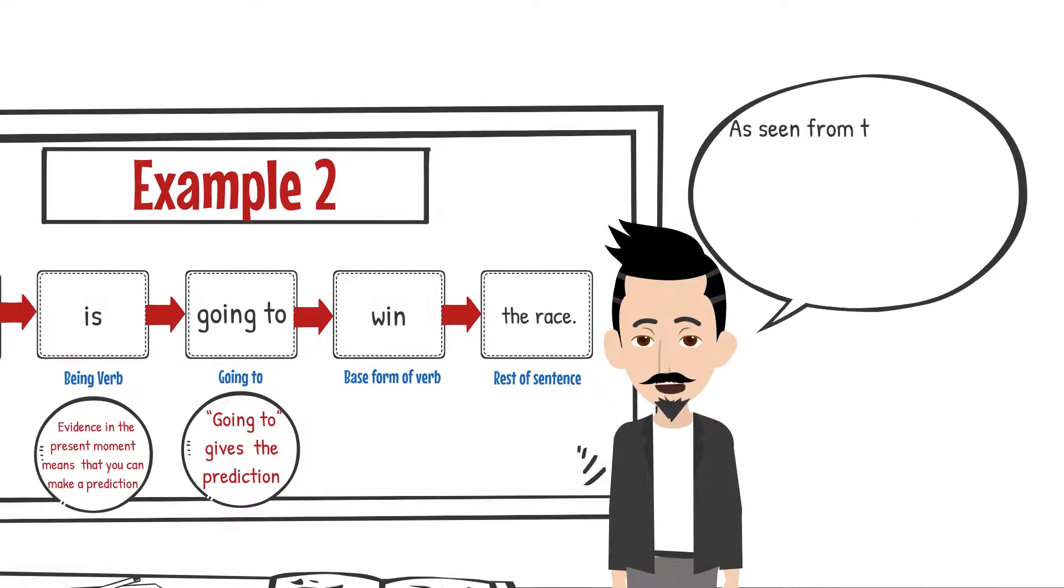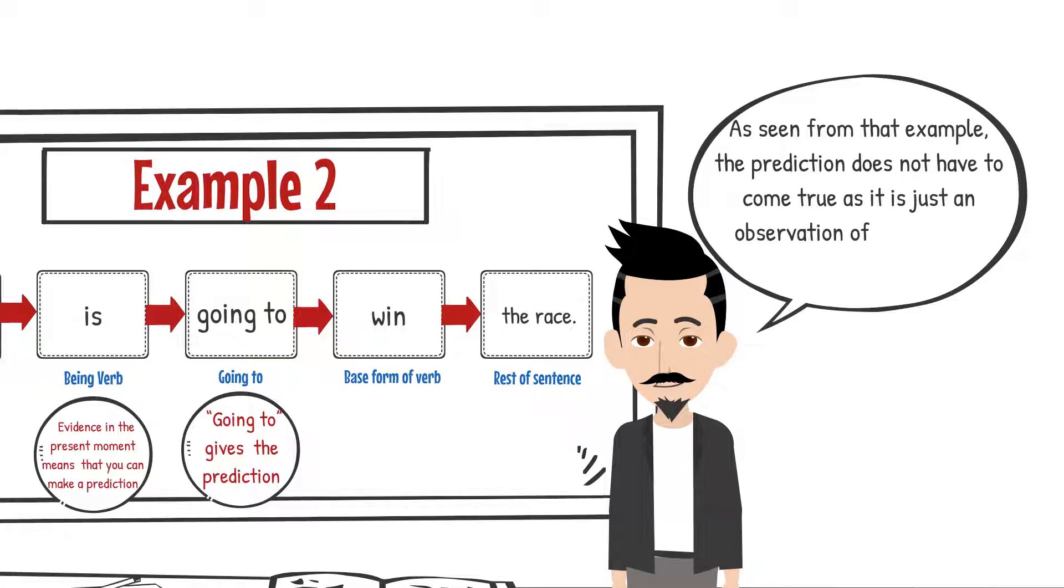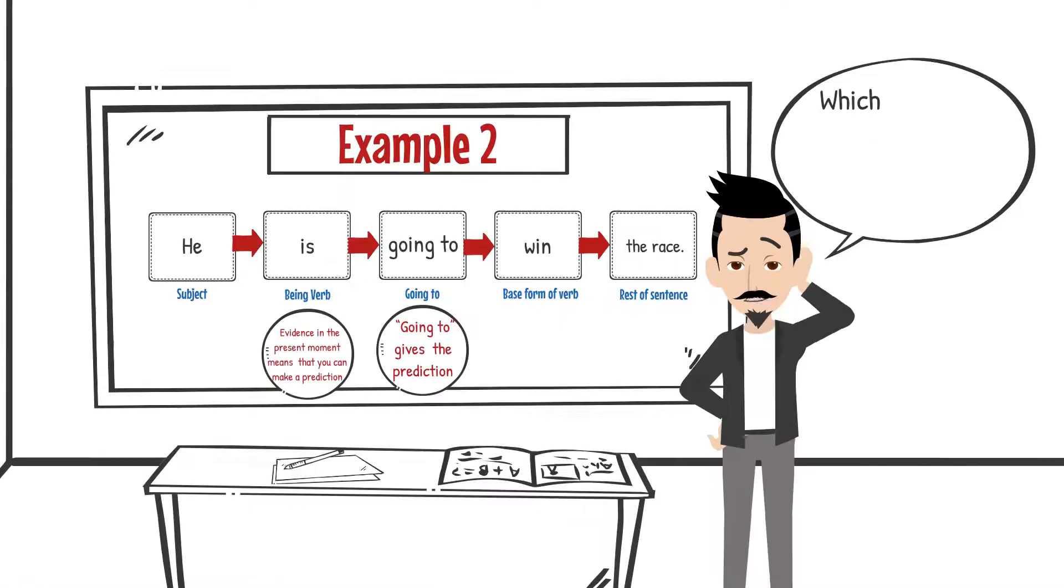As seen from that example, the prediction does not have to come true as it is just an observation of the current situation, which is unlucky for the runner who was leading the race.